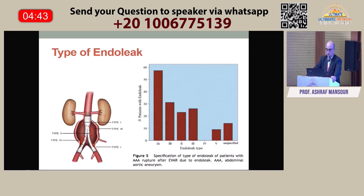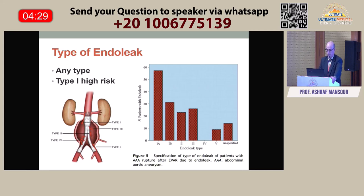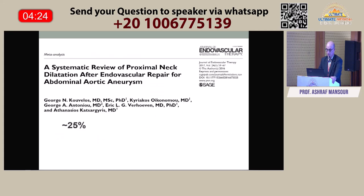When you look at all the patients reported with rupture after endovascular repair, you can see that every type of endoleak is implicated. But the most common types are type 1A and type 1B — proximal and distal. Type 1 carries the highest risk. One report published a few years ago looked at patients who had EVAR and the behavior of the proximal neck, and found that the proximal neck has a tendency to dilate.